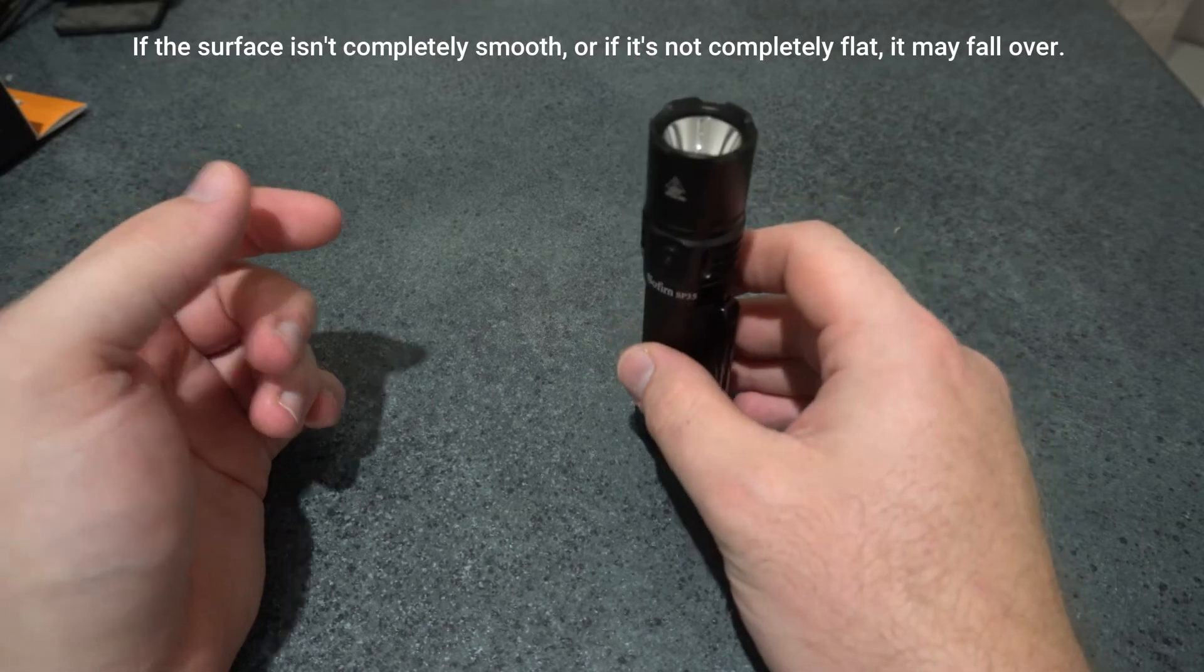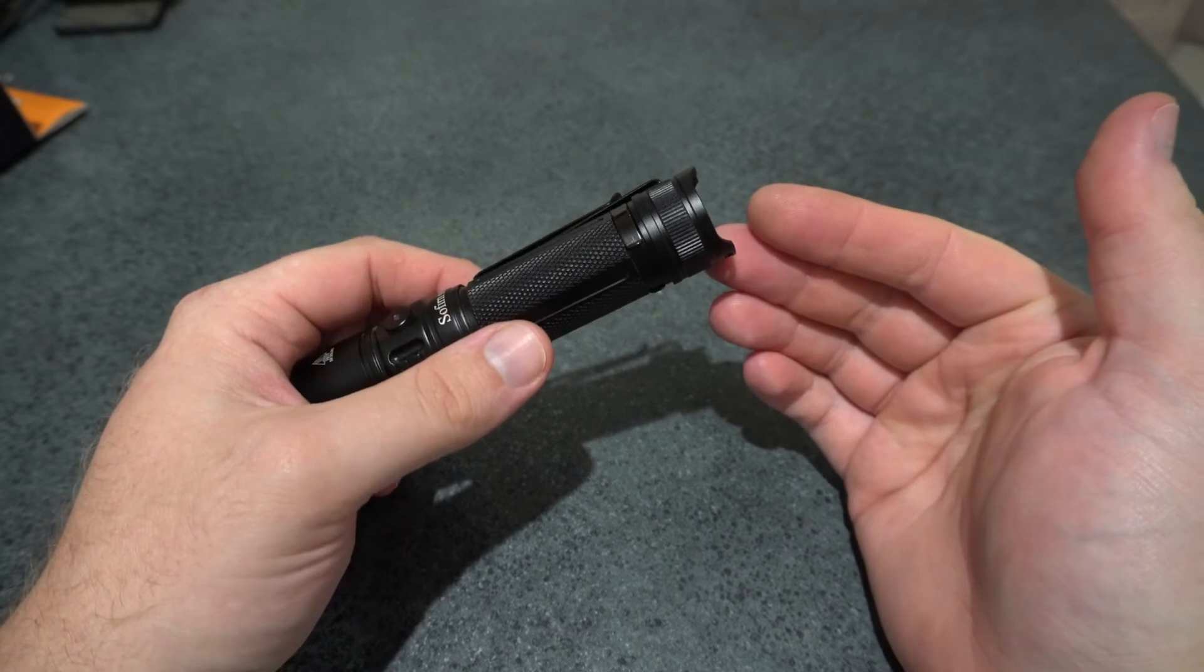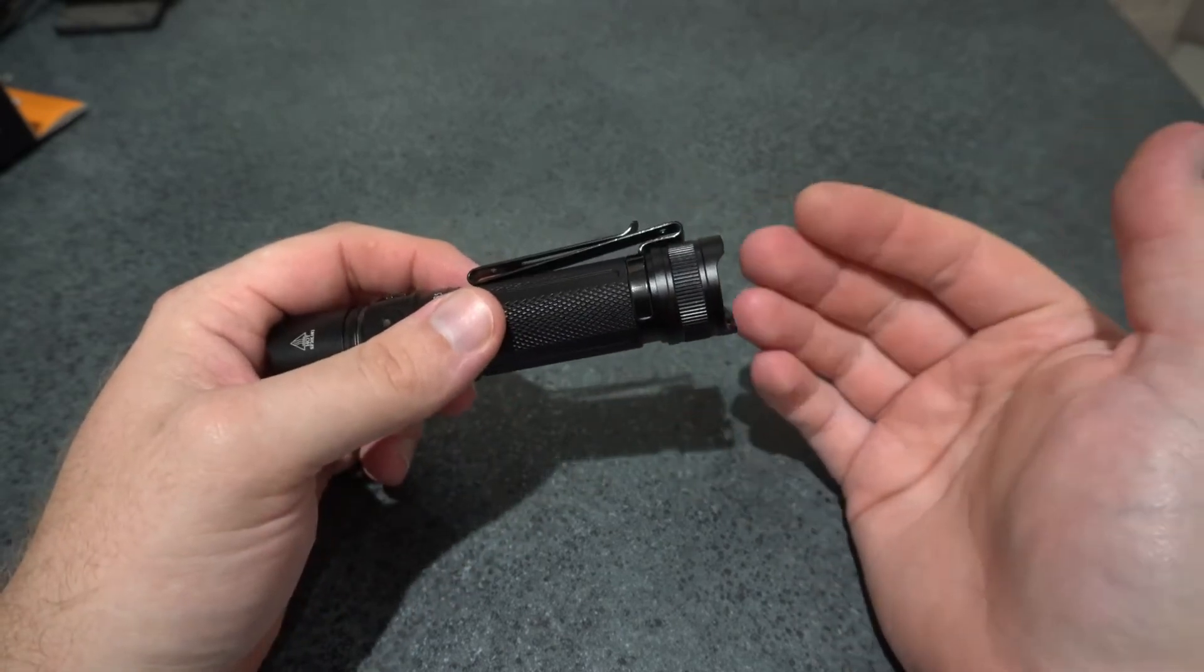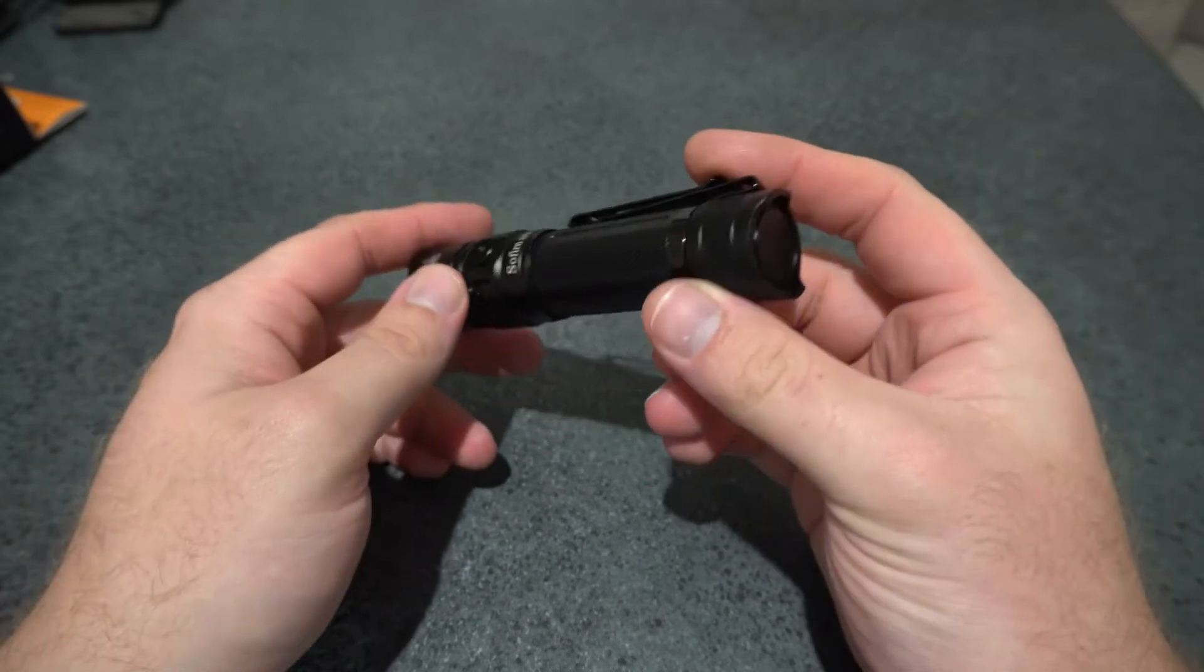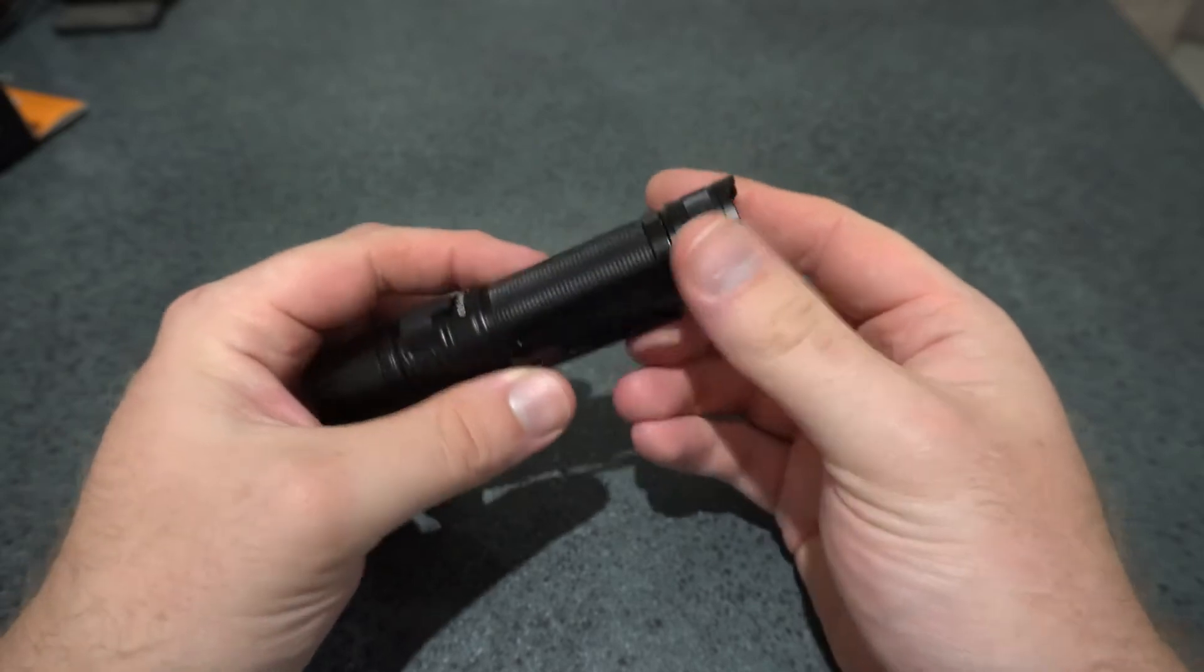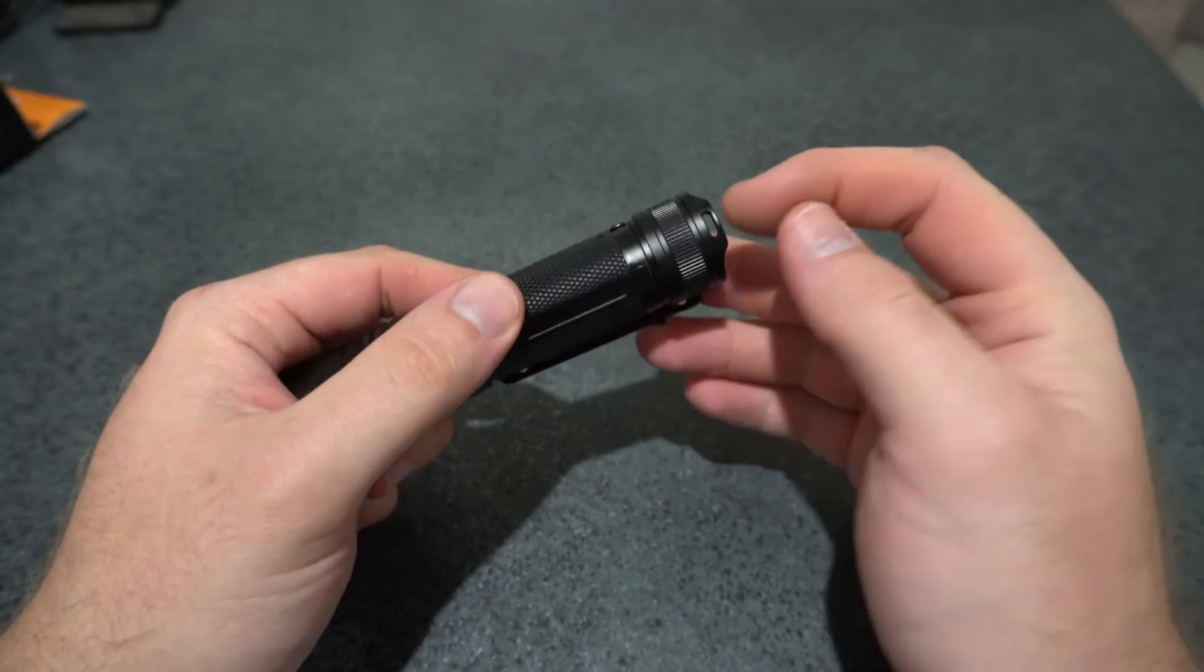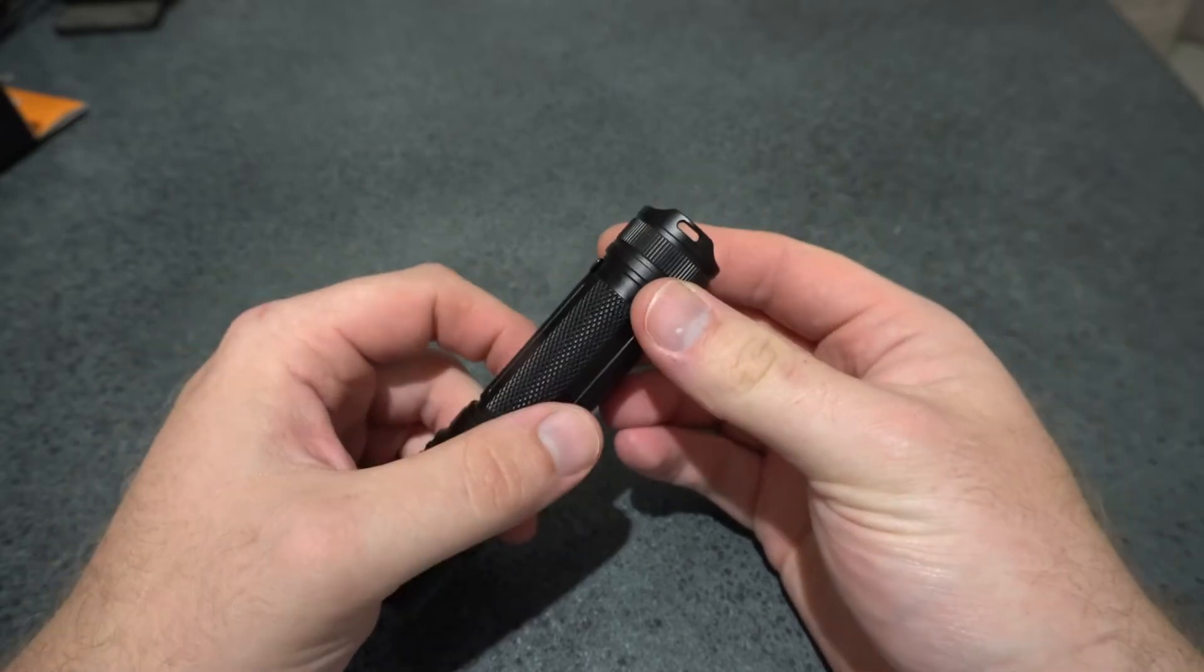But I personally would've liked just a flat surface with a lanyard attachment, like something like what they've done on the SC-32A. For tail standing, if you have your lanyard through here and the loop going around and over, tail standing is gonna not be so great.